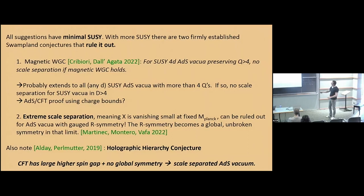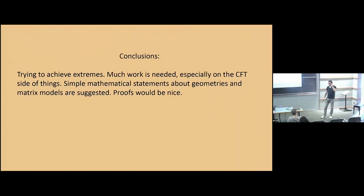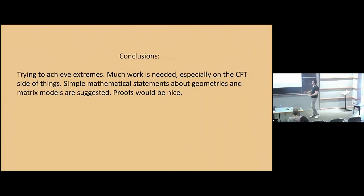In summary, I tried to achieve extremes. A lot of work is needed — there's no clear understanding of whatever I've said on the CFT side — but what I find very interesting is that at least some of these ideas lead to very simple yet difficult-to-prove statements in mathematics. For instance, the statement that there exist positively curved Einstein spaces for which, at fixed curvature radius, you can make the smallest eigenvalue of the Laplacian as large as you want. There's a mathematical conjecture against it; we're providing a sort of constructive proof. I also suggested something non-trivial about matrix models, for which I'm not an expert. It would be nice to prove some of these things. Thank you.